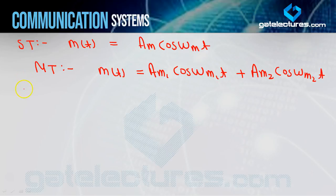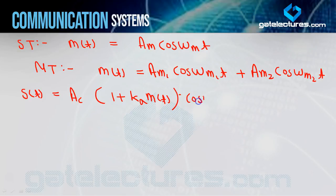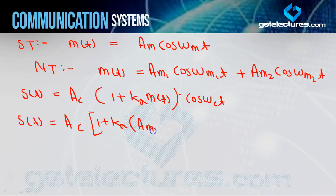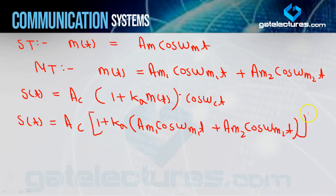यहाँ पर अगर मैं standard AM का equation consider करूँ, तो वो होता है: Ac[1 + Ka·m(t)]cos(ωc·t). If I put the m(t) value here, तो हमें multi-tone का equation मिल जाएगा: Ac[1 + Ka(Am1·cos(ωm1·t) + Am2·cos(ωm2·t))]cos(ωc·t).